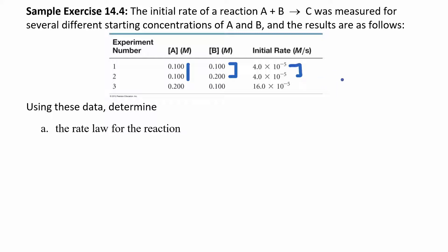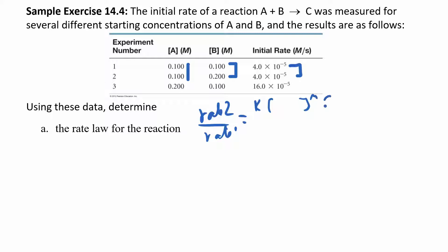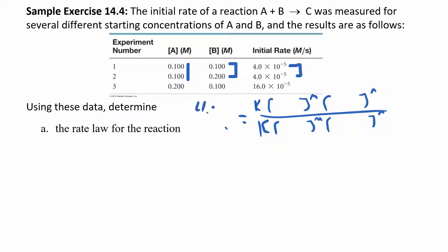But let's work it out anyway. We'll compare experiments 1 and 2 to figure out what n is — which we already said is going to be zero. I'm going to do rate 2 over rate 1. So I have k times concentration to the m times concentration to the n, over k times concentration to the m times concentration to the n. Rate 2 over rate 1 is 4.0 times 10 to the negative 5 over 4.0 times 10 to the negative 5, which gives me 1.